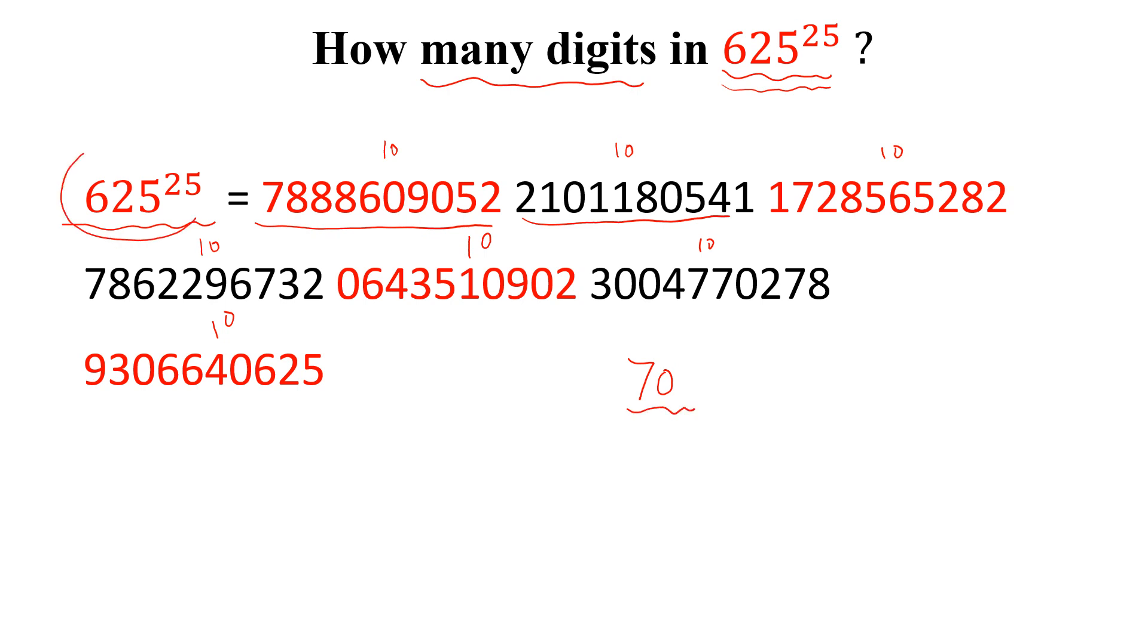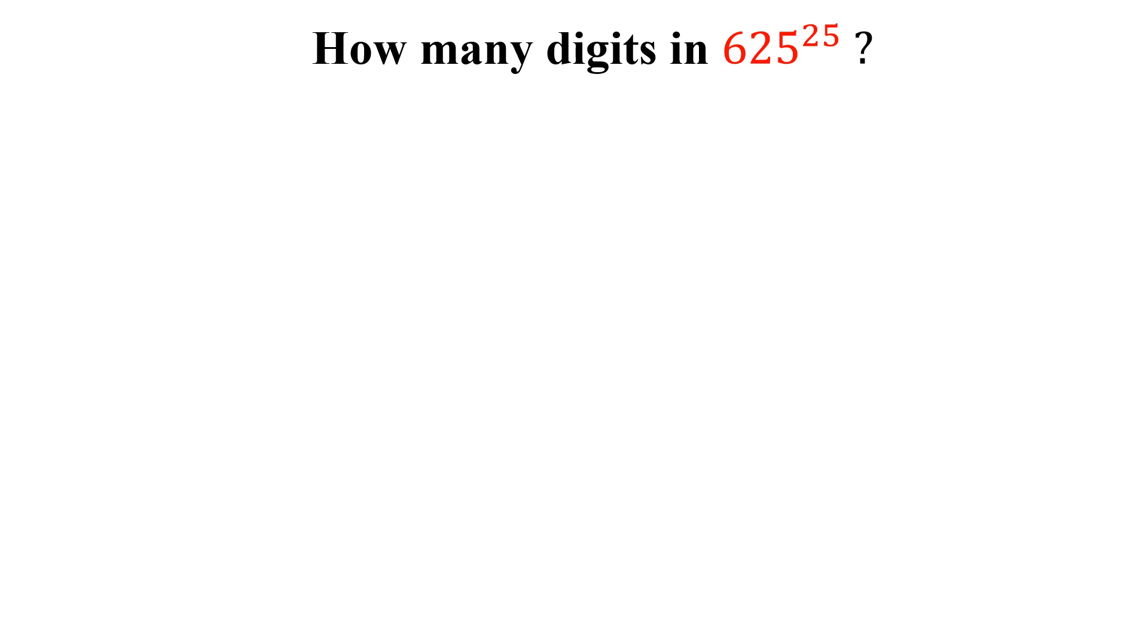These are total 70 digits. So 625 to the power 25, there are 70 digits in this number. But how can we calculate this through a formula? The formula to calculate the number of digits in a number is equal to this. The number of digits in n, n is any number, is 1 plus log n. And we will explain this bracket here.